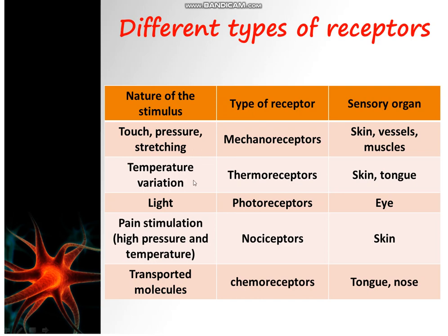If the stimulus is about temperature variation, the receptors are called thermoreceptors, found in the skin and the tongue. If the stimulus is light, the receptors are photoreceptors, found in the eye. Receptors of pain are called nociceptors, found for example in the skin. If the stimulus involves chemical substances or transported molecules, the receptors are called chemoreceptors, found in the tongue for taste and in the nose for smell.